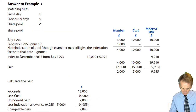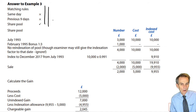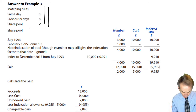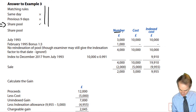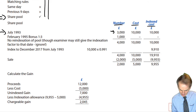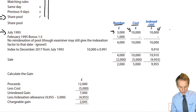Let's go through the answer to Example 3. On reading through, we determined there were no acquisitions on the same day as the disposal nor within the previous nine days, so our only exercise is with the share pool. Set up three columns for the share pool and kick off with the original acquisition in July 1993: 3,000 shares, cost £10,000, and that same £10,000 goes into the index cost column.